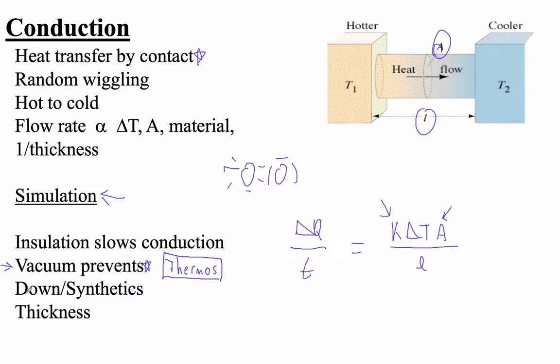And then as far as preventing conduction, you can use down and synthetics. Down is by far the greatest insulator. And basically all these insulators do is they trap air. Air is a very poor conductor of heat. And then you need some thickness. So basically the down just keeps the air from moving, just traps warm air. And the same thing with synthetics.